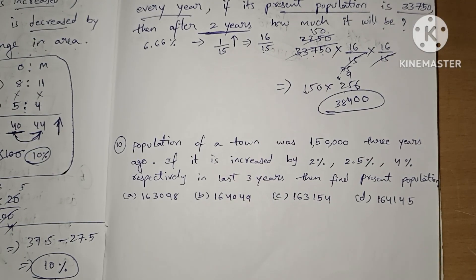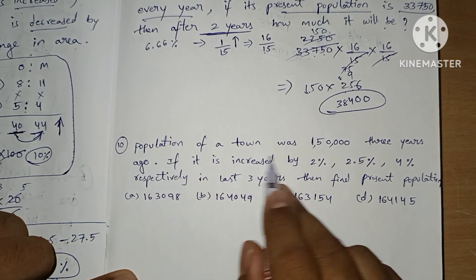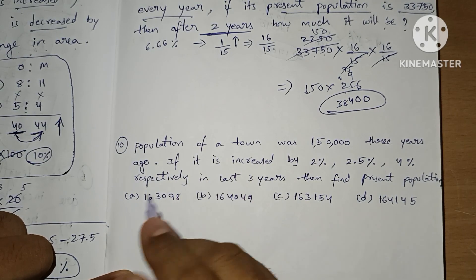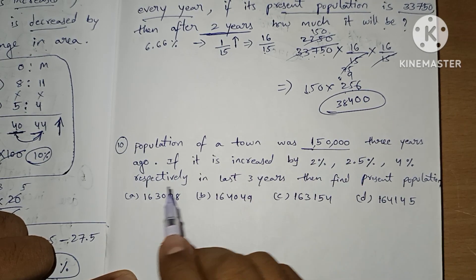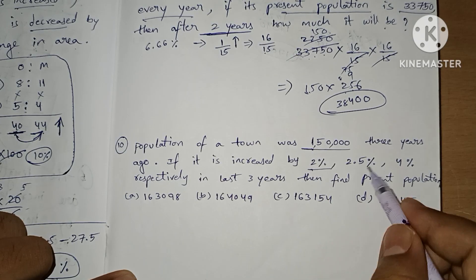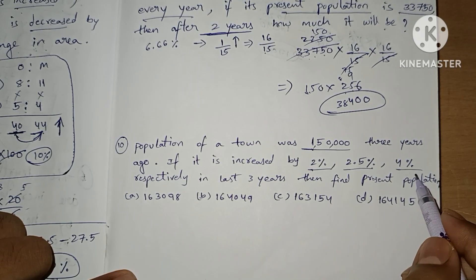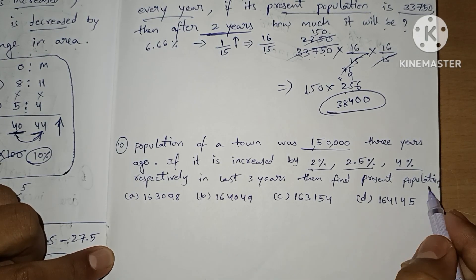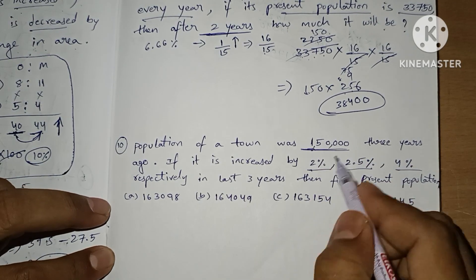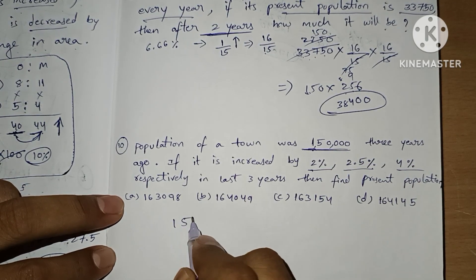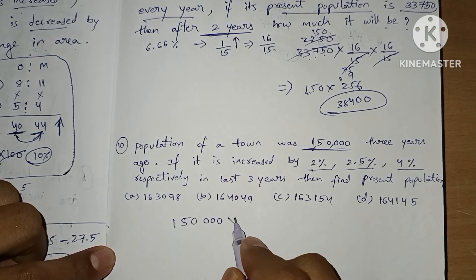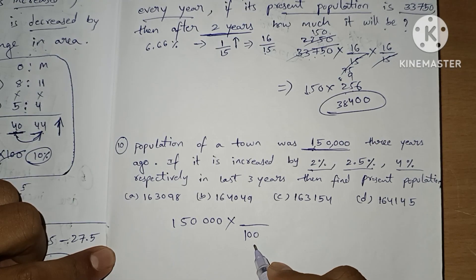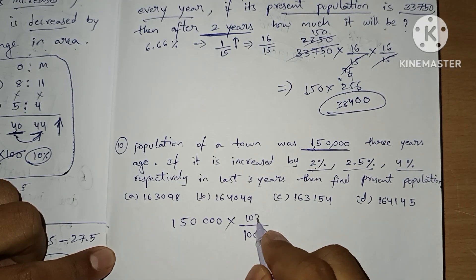Now we are going to see one more question. The population of a town was 1,50,000 three years ago. Three years back the population is this. If it is increased by 2 percent, 2.5 percent, and 4 percent respectively in the last three years. Three years back we have 1,50,000 — this is 100 percent. In the first year it is increased by 2 percent.